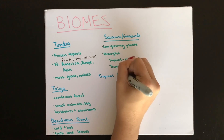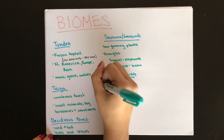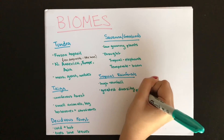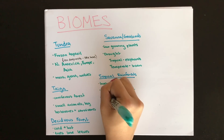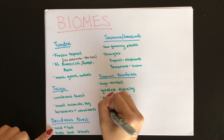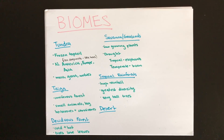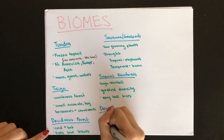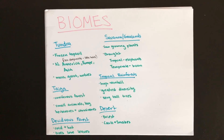Tropical rainforests have very high rainfall. The greatest diversity of flora and fauna is found in tropical rainforests, which feature very tall trees, vines, and canopies. The desert is the driest of the biomes; animals and plants are adapted to the arid environment and include cacti and snakes. That ends our discussion on terrestrial biomes.